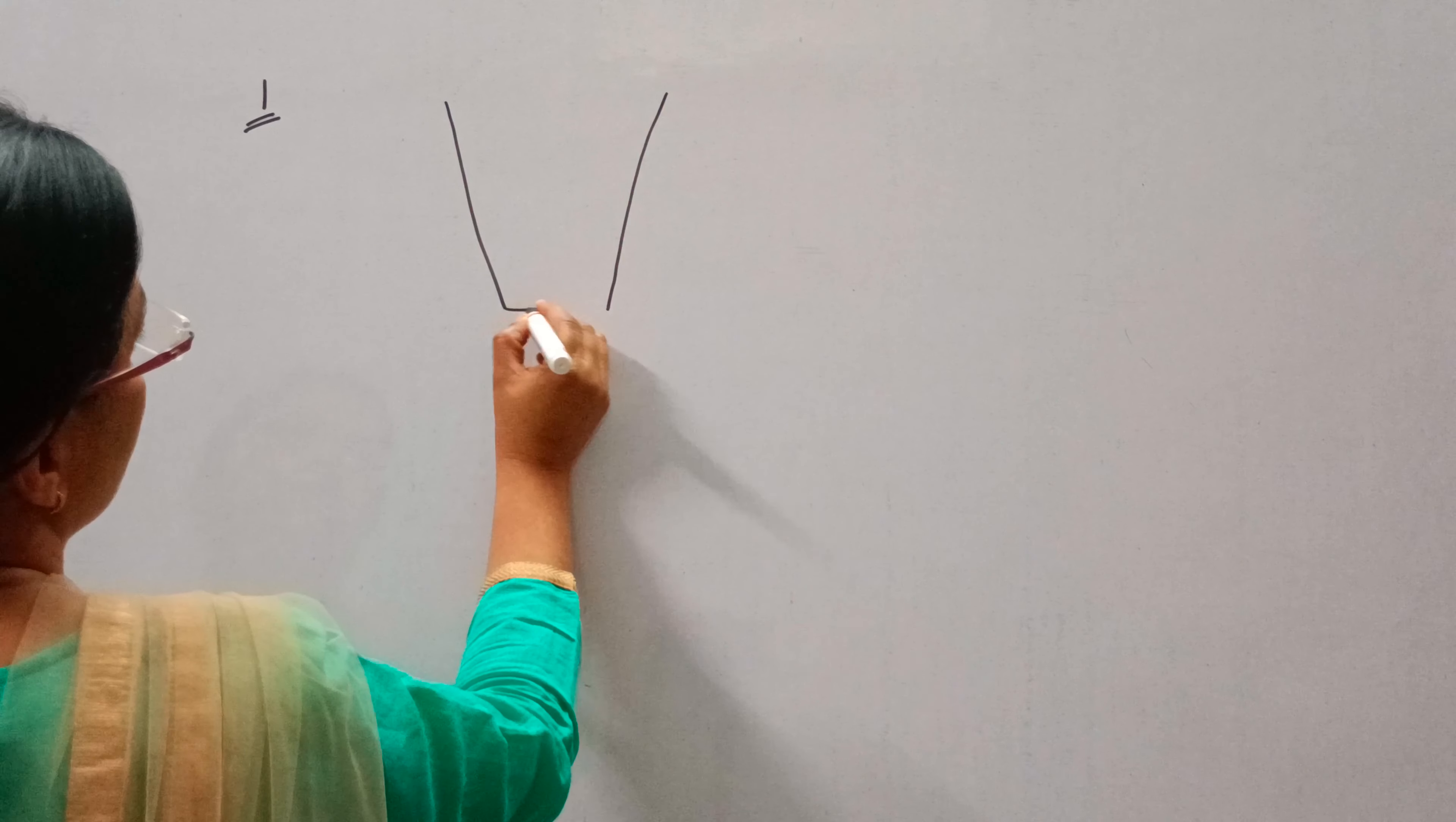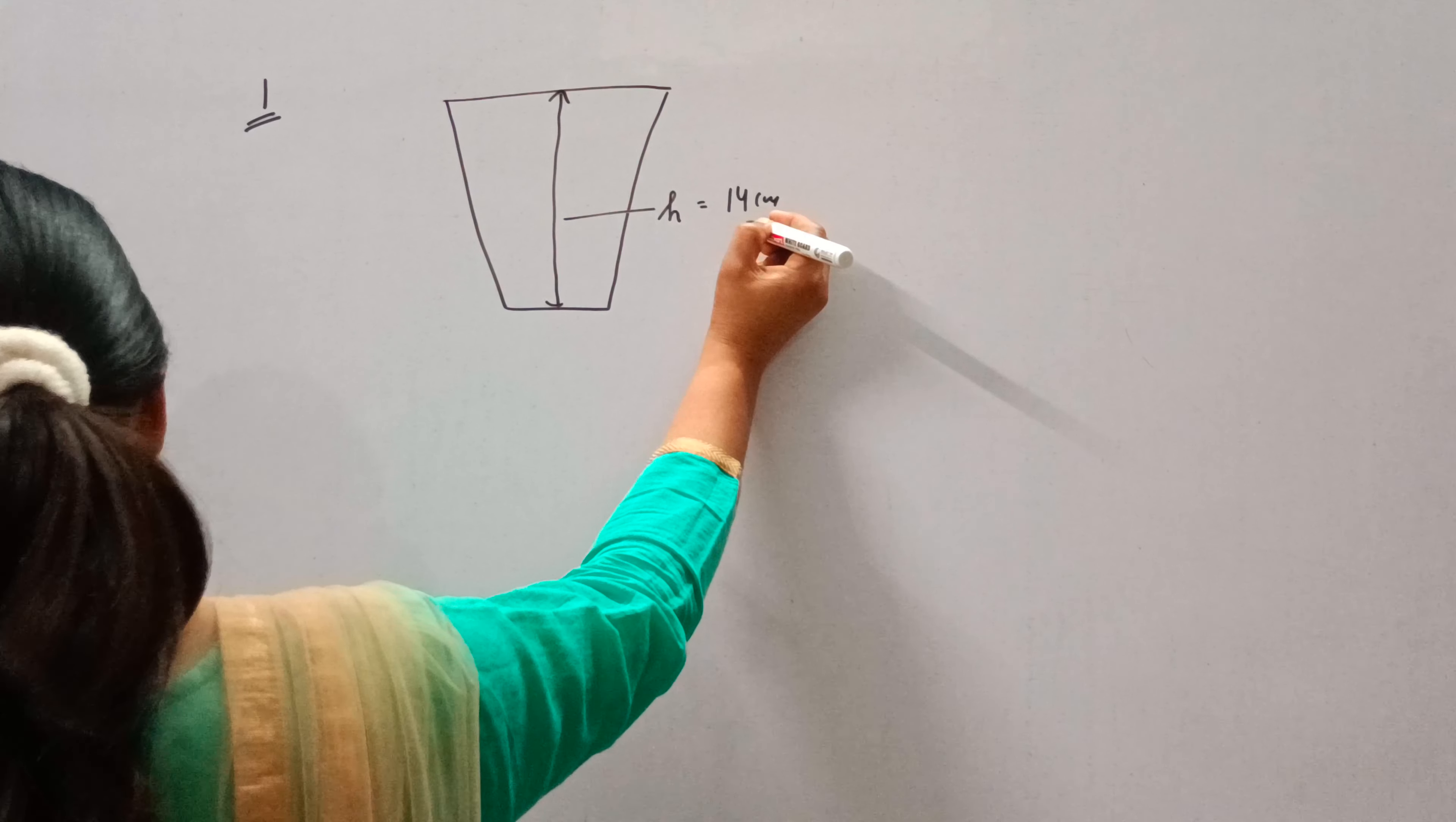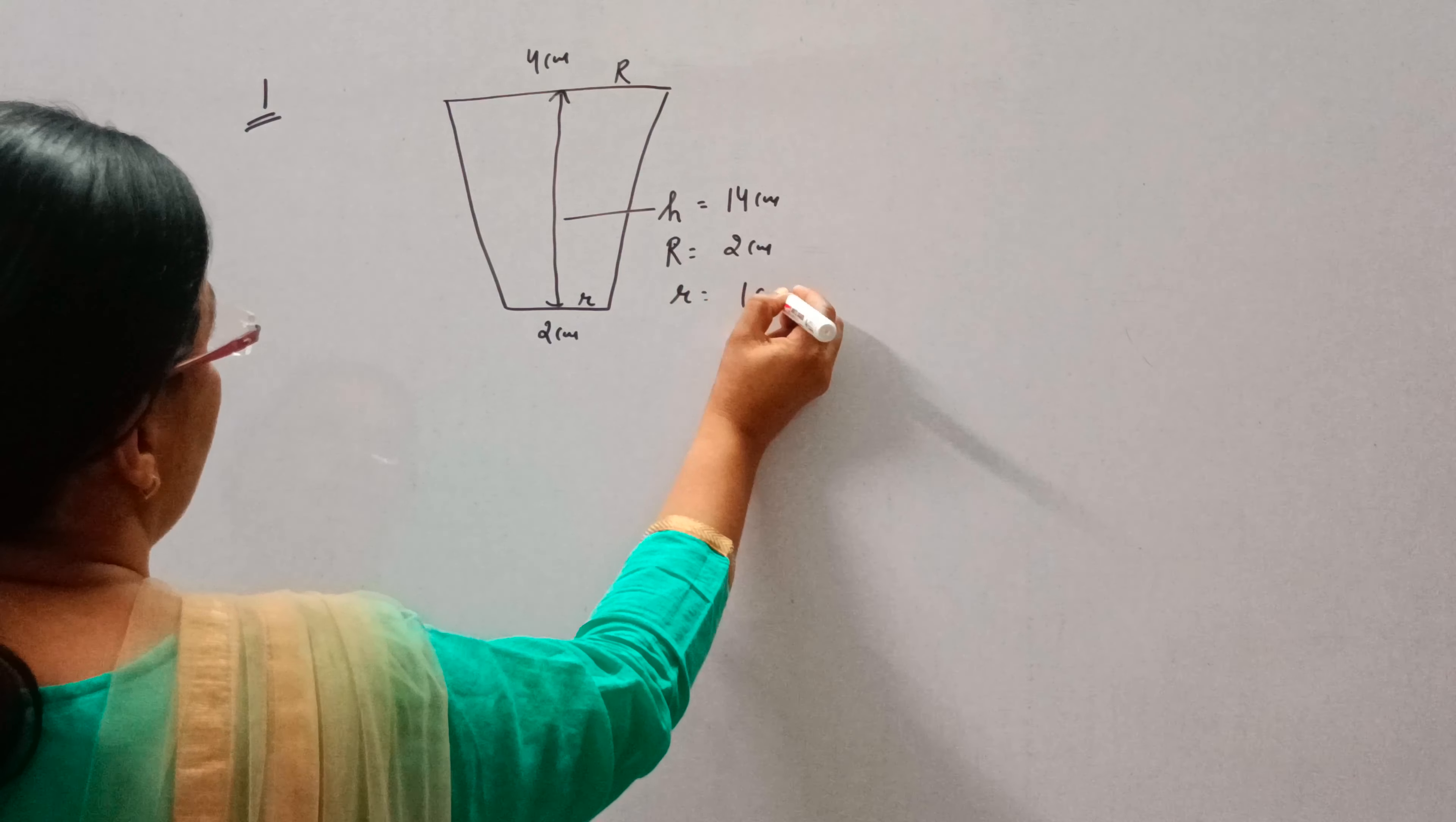So this is the glass, and it is in the form of a frustum, and its height is 14 cm. The diameter of its two circular ends are 4 cm and 2 cm. So the upper radius will be 2 cm and lower radius will be 1 cm.